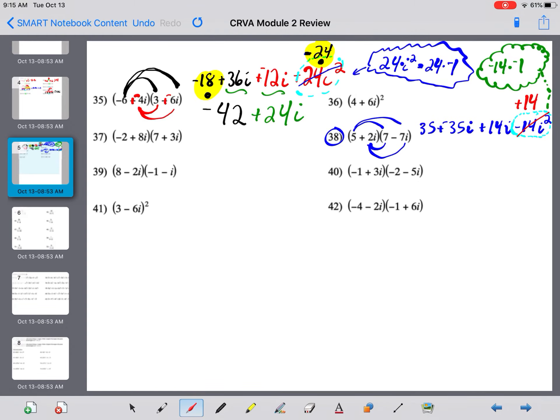So, we can now combine 35 and 14, which makes 49. And, we can combine our imaginary parts, which gives you negative 21i. And, there we are.